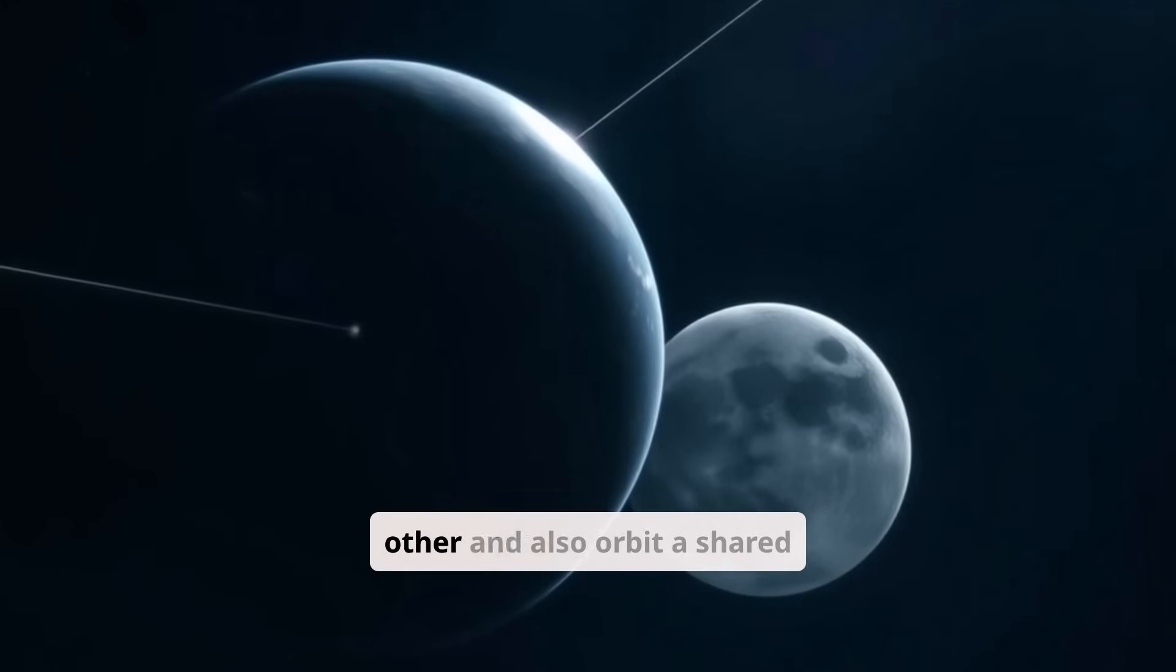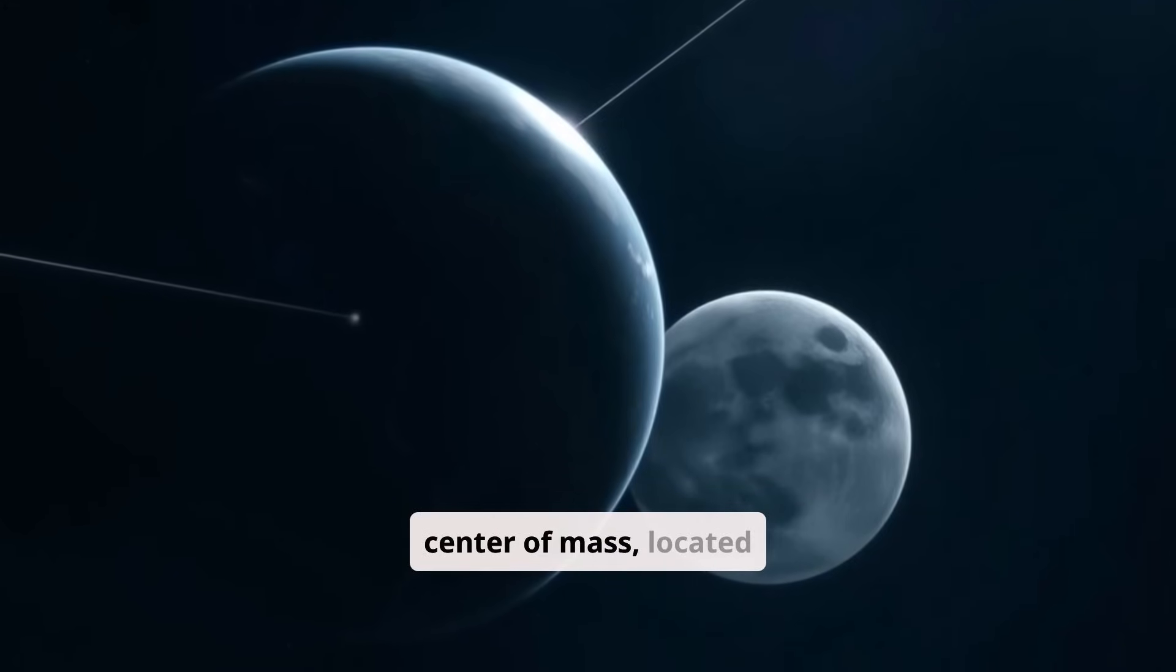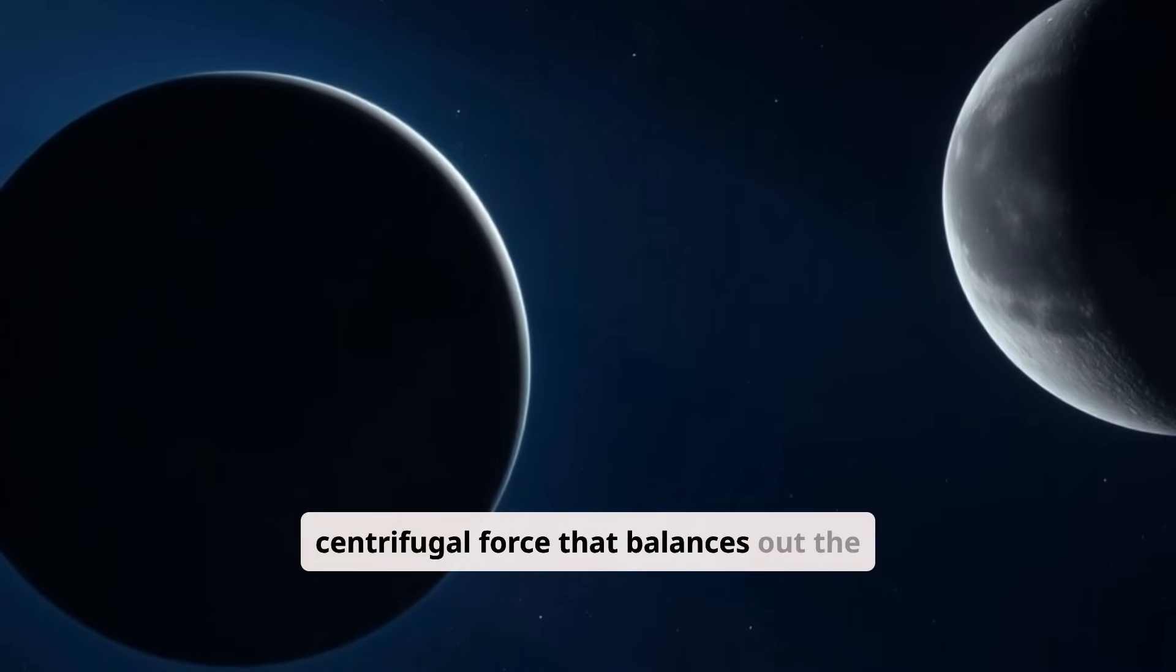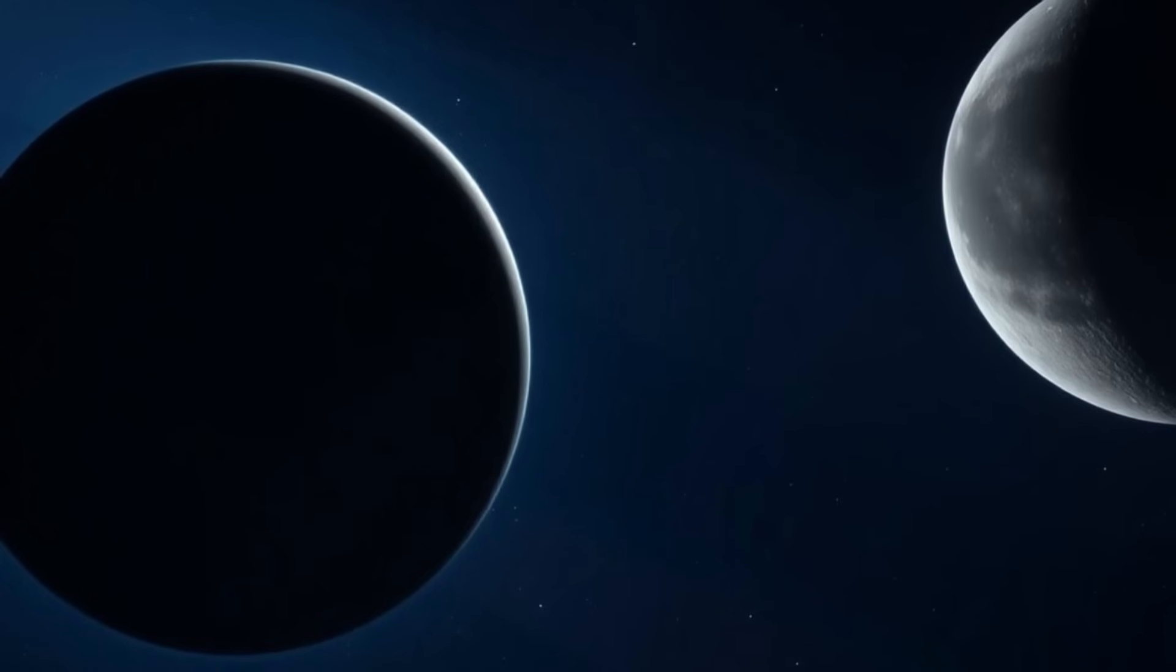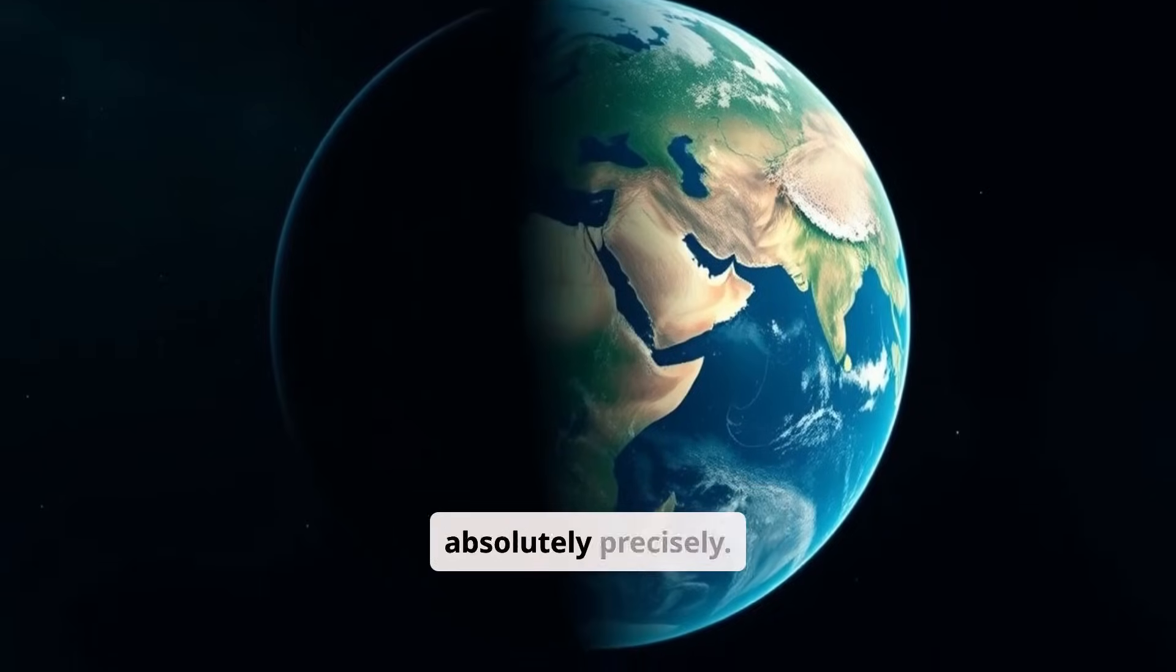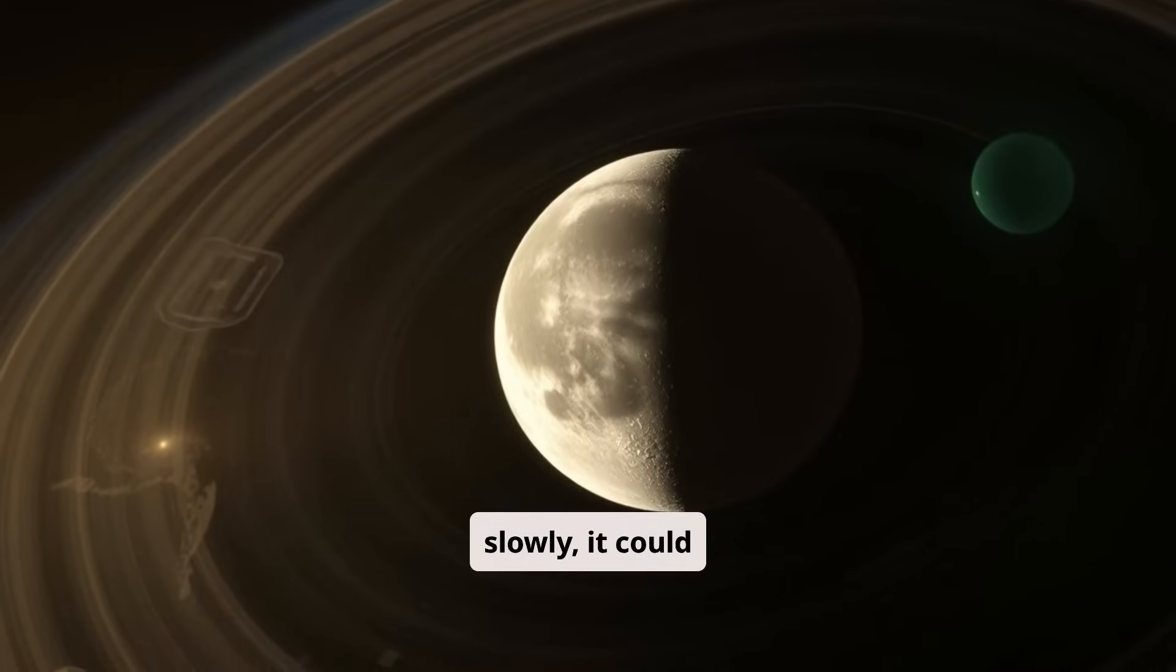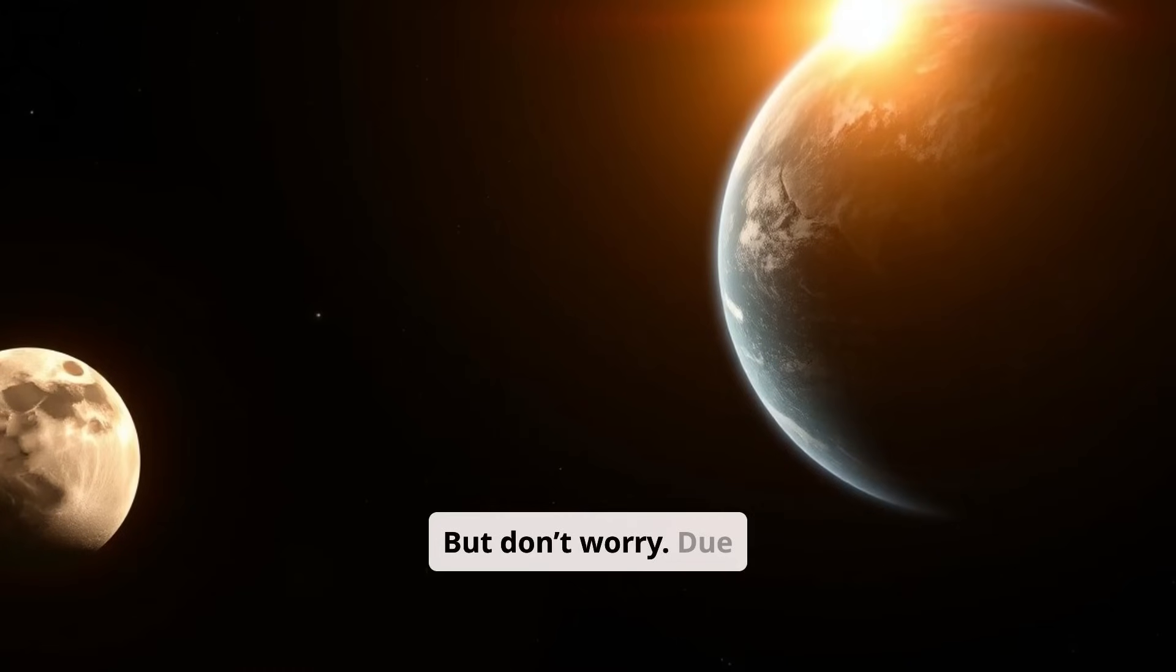The earth and moon attract each other and also orbit a shared center of mass, located deep beneath the planet's surface. This creates a centrifugal force that balances out the gravitational pull. Everything is calculated absolutely precisely. If the moon moved just a little more slowly, it could theoretically fall.